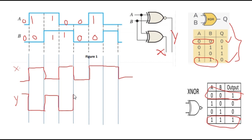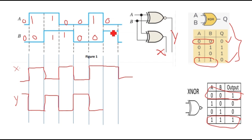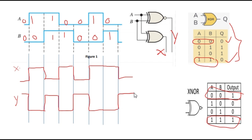Again 0,0 is same so output is 1. Then 1,0 is different so output is 0. Then 0,1 is different so output is 0. Again 0,0 — both inputs are same — so the output becomes 1 again. This completes the XNOR waveform Y.